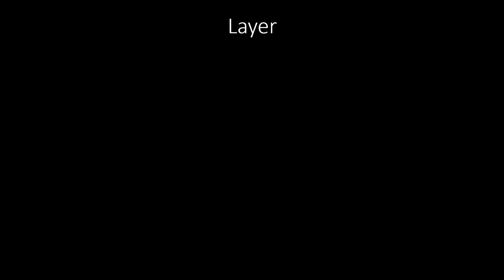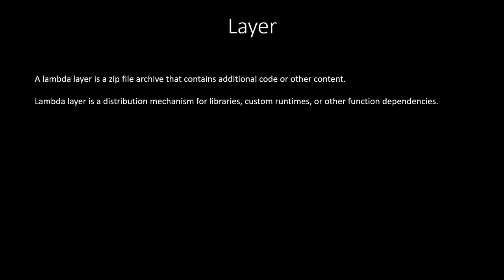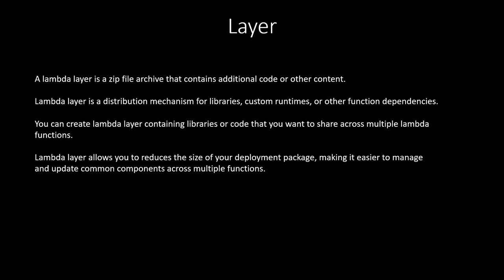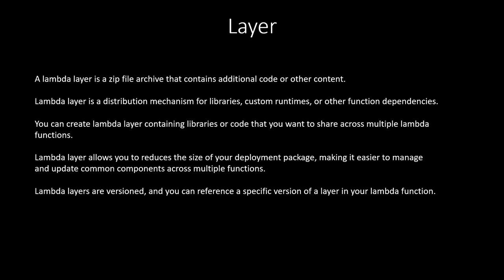Another concept is layer. A Lambda layer is a ZIP file archive that contains additional code or other content. It is a distribution mechanism for libraries, custom runtimes, or other function dependencies. You can create a Lambda layer containing libraries or code that you want to share across multiple Lambda functions. Layers allow you to reduce the size of your deployment package, making it easier to manage and update common components. Lambda layers are versioned, and you can reference a specific version in your function. For example, if a common library is used by several Lambda functions, you create a layer for it and reference that layer in each function — avoiding code duplication and simplifying maintenance.